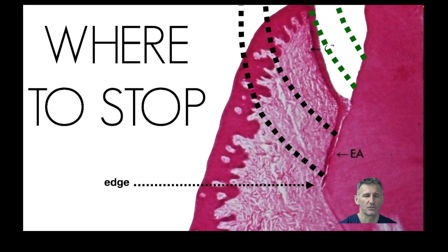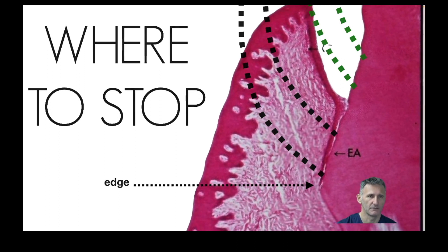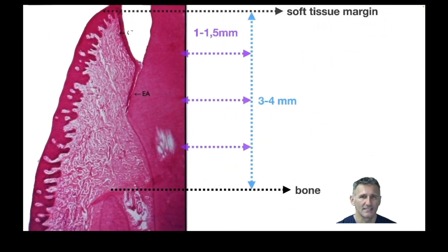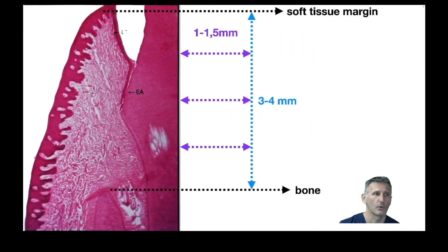If you do the provisional crown at the black line, you will have inflammation for sure. You have to stay in the green area - the green area is the correct one. But it's extremely challenging to understand where we are.